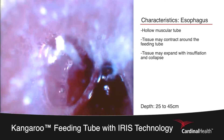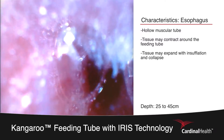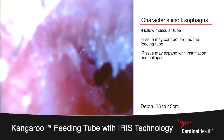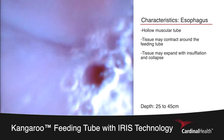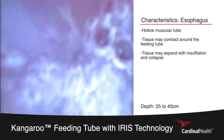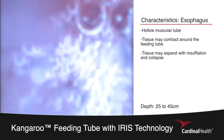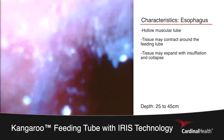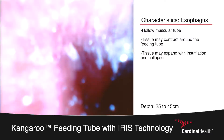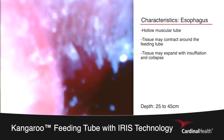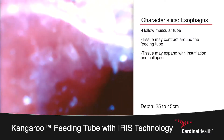You will be looking for the tissue of the esophagus to contract around the tip of the feeding tube. You can utilize the insufflation bulb to add air and create space to ensure you are in the esophagus, as can be seen here.